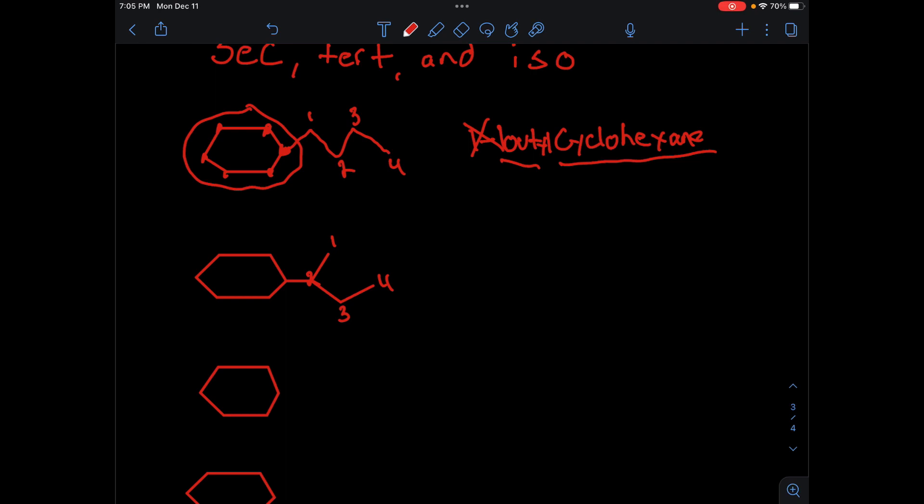If you put this word 'sec' in here, it would be italicized in front of whatever you have, so you can say sec-butyl cyclohexane. The reason it's called sec-butyl, or secondary butyl—sometimes you'll see it just written as s-butyl or just s—is because...